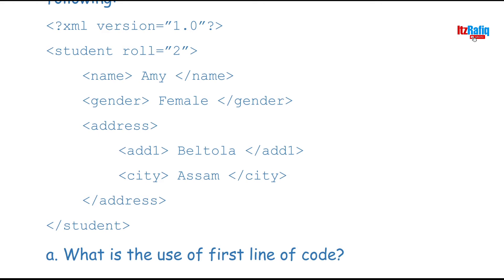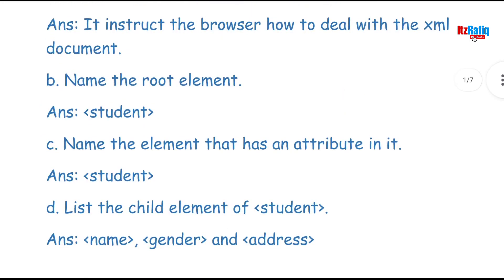So the element that has an attribute in it is student. If the question asks for the attribute name, then the answer will be 'role' — role is the attribute, student is the element, and the value is 2. That is the answer for question 3 about the attribute element.